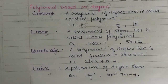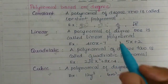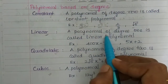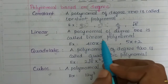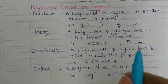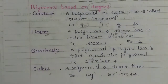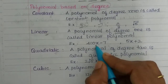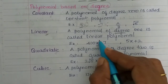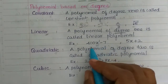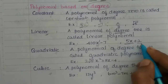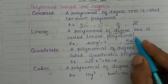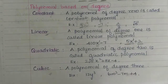Next is linear. A polynomial of degree 1 is called a linear polynomial. For example, 10x minus 7 — there is a variable here and the power is equal to 1. If you have 5x plus 2, the constant 2 has power 0 and x has power 1. Highest power is equal to 1, so this is a linear polynomial.